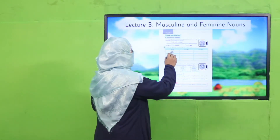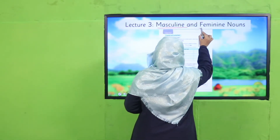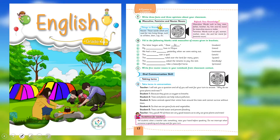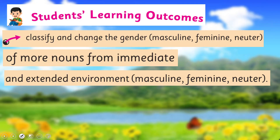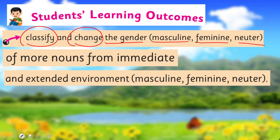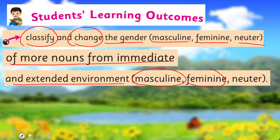My dear children, we are going to learn about masculine and feminine nouns. Before this, in English for Grade 4, I have already taught you masculine and feminine — I hope you remember. If not, you may watch that video lecture again. We are going to learn further: to classify and change the gender — masculine, feminine, and neuter — of more nouns from immediate and extended environment. This is our today's SLO.